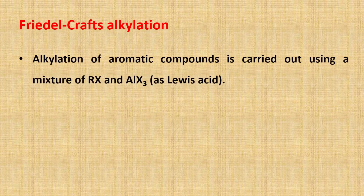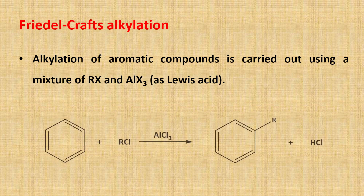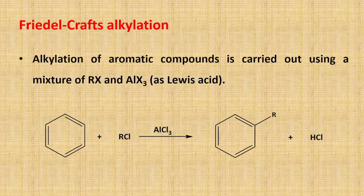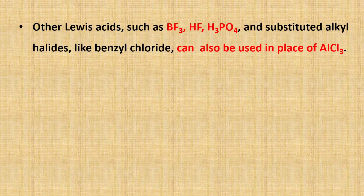Let's start with Friedel-Crafts alkylation. Alkylation of aromatic compounds is carried out using a mixture of alkyl halide and aluminium trihalide, which acts as a Lewis acid. The function of Lewis acid is to generate strong electrophiles related to carbocations for an attack on the aromatic ring. Other Lewis acids such as trifluoroboron, hydrofluoric acid, and phosphoric acid, and substituted alkyl halides like benzyl chloride, can also be used in place of aluminium trichloride.